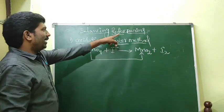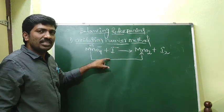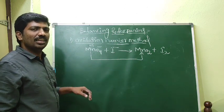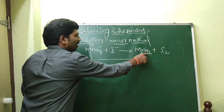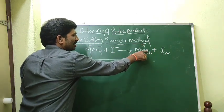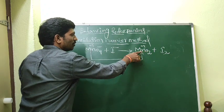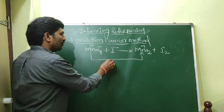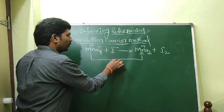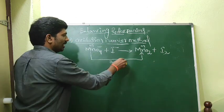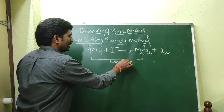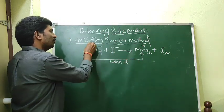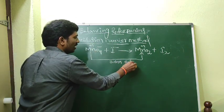Now we identify which is oxidation and which is reduction. For MnO2, oxygen is −2 × 2 = −4, so Mn is +4. Mn goes from +7 to +4 — a difference of 3 units. Three electrons are gained, so this is reduction.